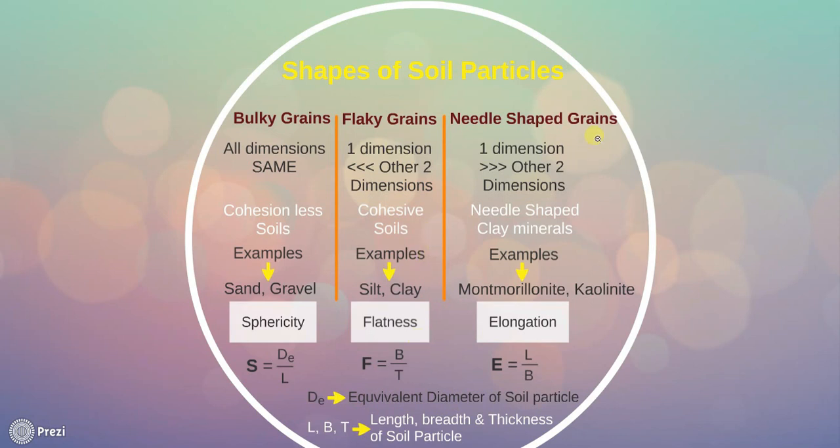Needle shaped grains are grains in which one dimension is much larger than the other two dimensions. As these resemble needles, they are termed needle shaped grains. Such grains are characteristic of clay minerals like montmorillonite and kaolinite. Due to its shape, elongation property E can be defined as E equals L divided by B. L means length of soil particle and B means breadth of soil particle.